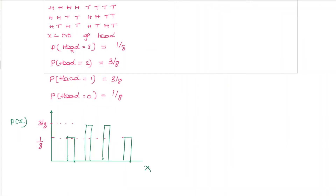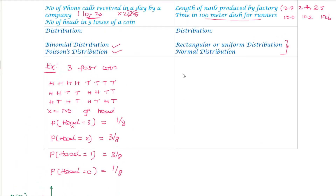Then we plot the graph. On the x-axis we plot the number of heads — x equals 0, 1, 2, 3 — and on the y-axis we plot the probability. This gives us the probability distribution for the number of heads in three coin tosses.